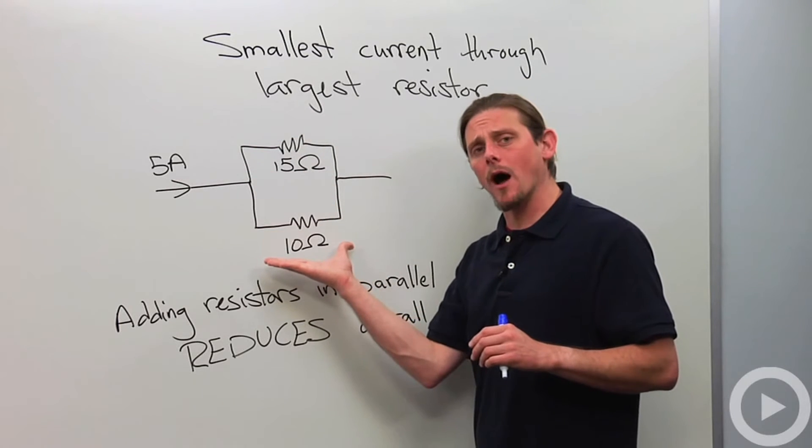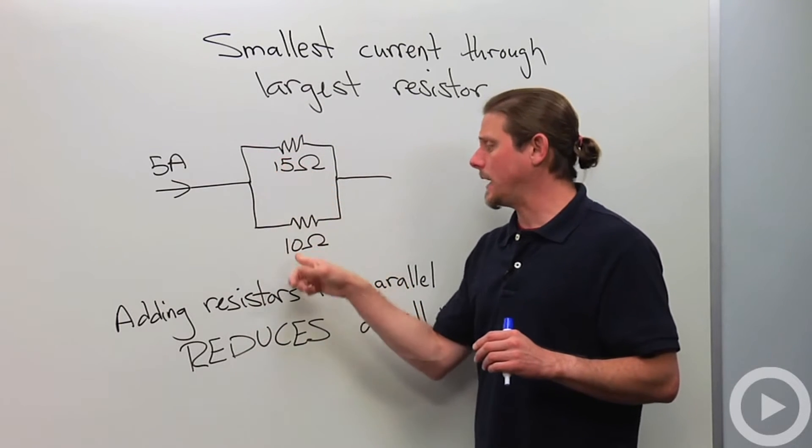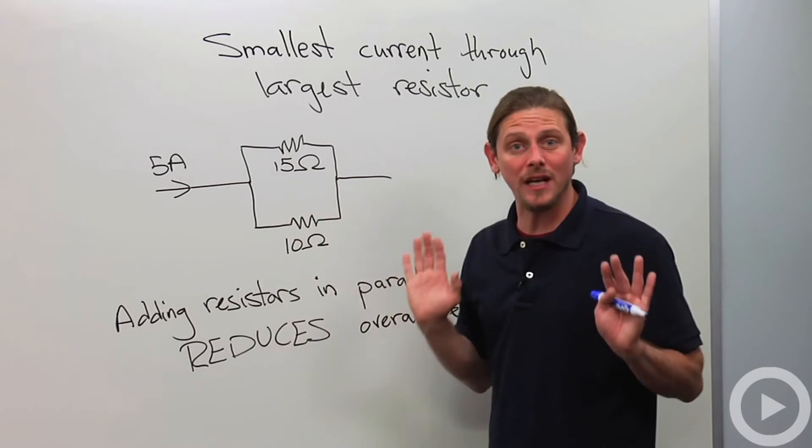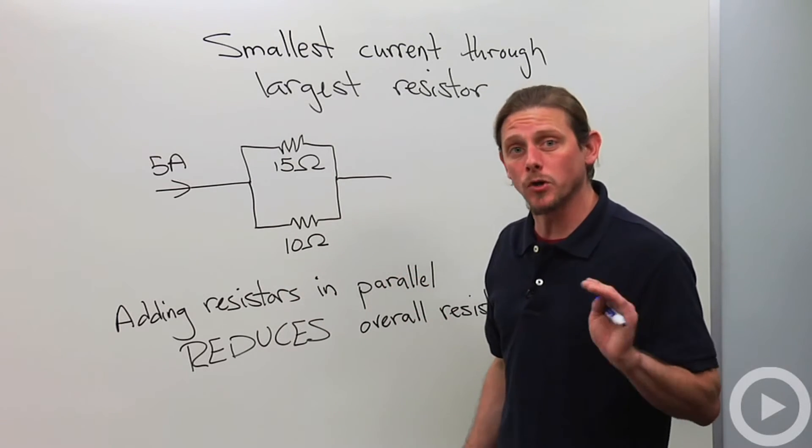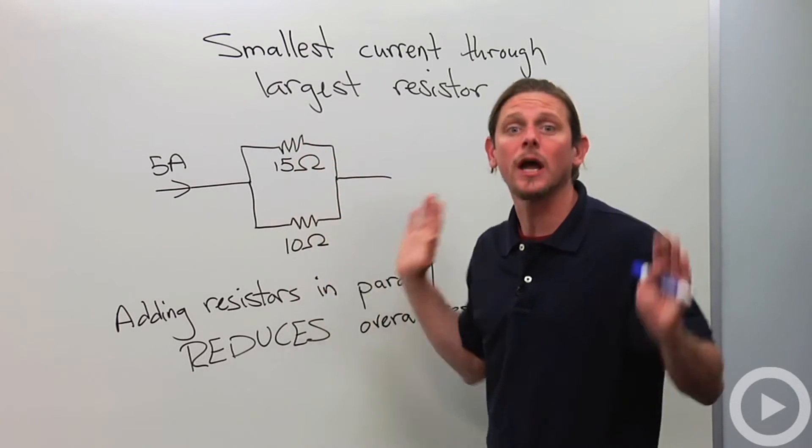So the smallest current will go through the largest resistor in a parallel combination. All right, so how are we going to determine how much current goes through the 15 and how much current goes through the 10? It's actually really easy.